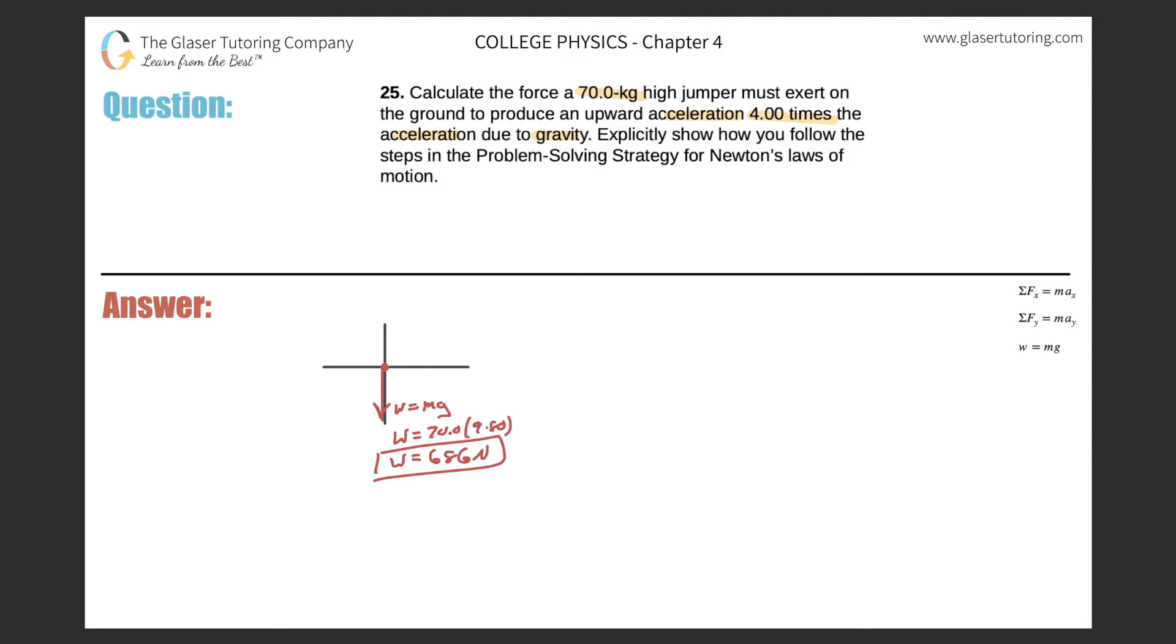Now that's the weight of gravity pulling down, or the force of gravity pulling down on the jumper. But now it says that the jumper wants to accelerate upwards, an upward acceleration. So therefore, we're going to have an acceleration in the positive y direction. That's going to be some number.